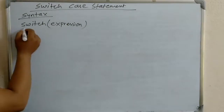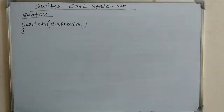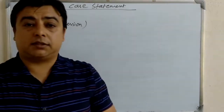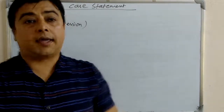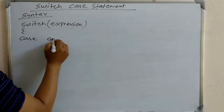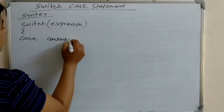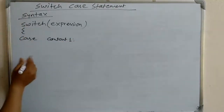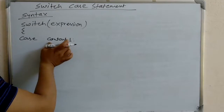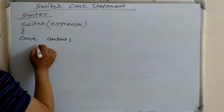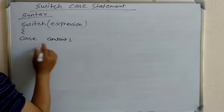Then there appear the curly braces. Inside the curly braces, we write different options using the keyword 'case', followed by a constant value or character and a colon. If this value is matched with the expression, then it executes the statement.